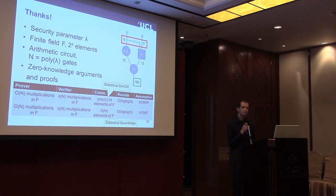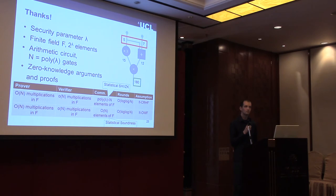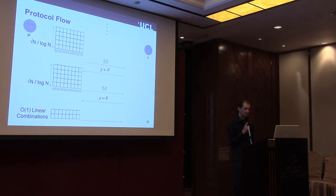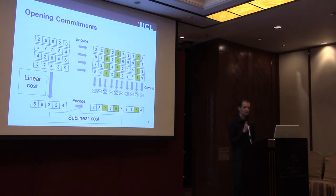Question: Just a clarification about the sublinear part in the verification — what is the trade-off in setting it to something? Is it with communication? If you set it to square root, do you get square root communication? If you set it to third root, do you get larger communication? Answer: The sublinear verification cost is not tunable. The sublinear verification cost comes from the verifier applying the error correcting code to many different vectors, and since the error correcting code has a linear time encoding cost, the verification cost isn't tunable.